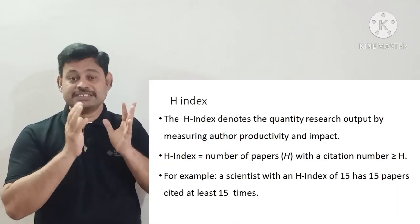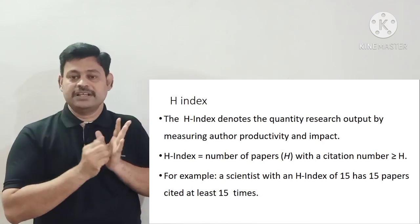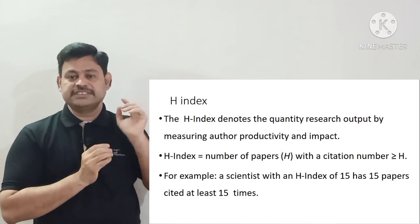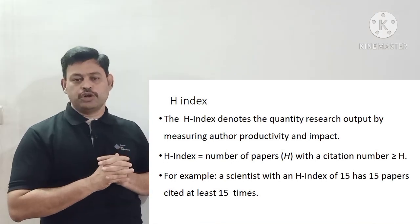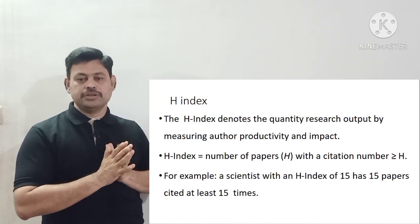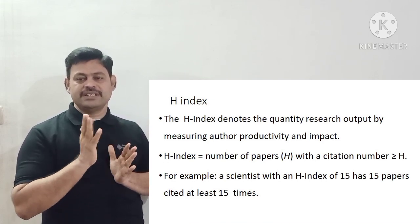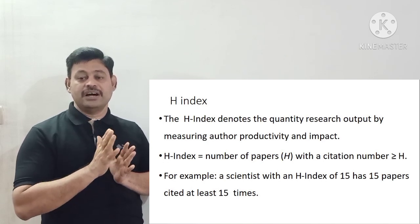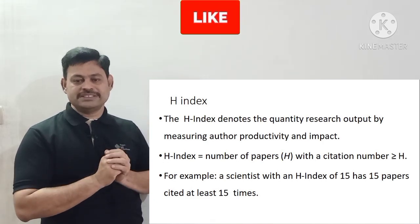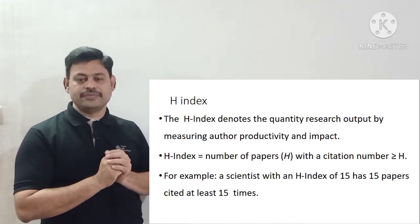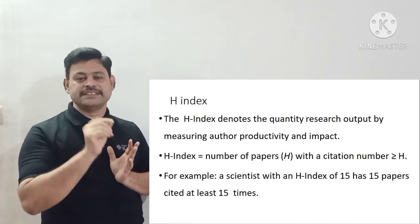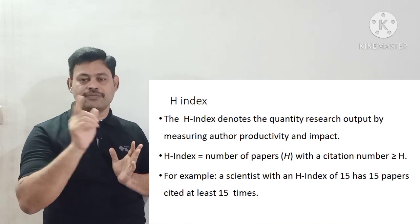The h-index is very critical and is also used in purpose-size calculations. The h-index denotes the quantity of research output by measuring author productivity and impact. H-index equals the number of papers h that have a citation count greater than or equal to h. For example, a scientist with an h-index of 15 has 15 papers cited at least 15 times. That is the physical meaning of the h-index.